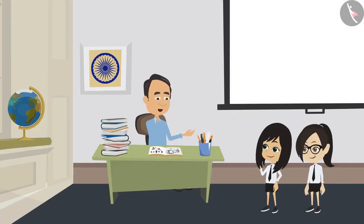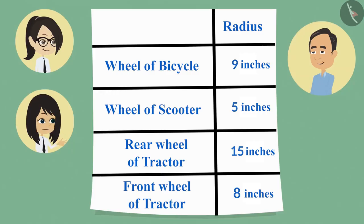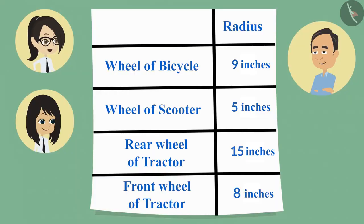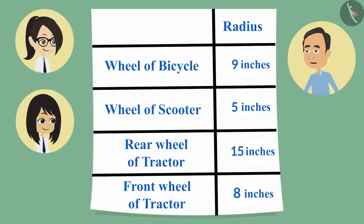us see whatever you have measured. Here you are sir. Yes, your measurements look right. Which wheel had the largest circle? The rear wheel of the tractor had the largest circle. And which was smaller, front wheel of the tractor